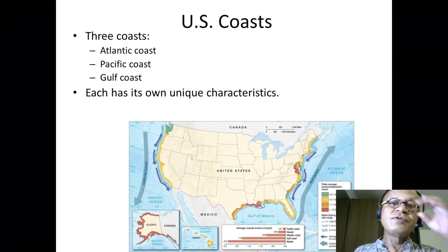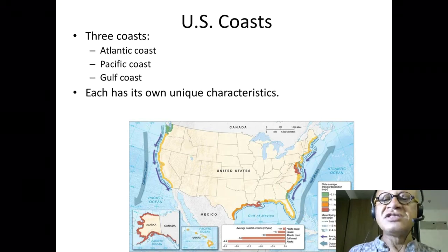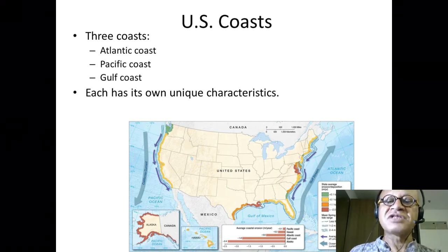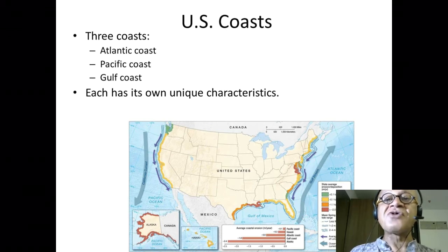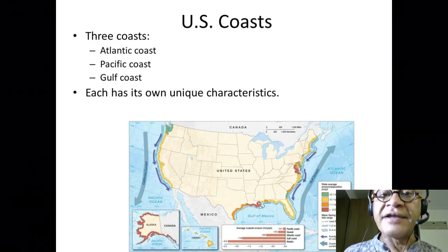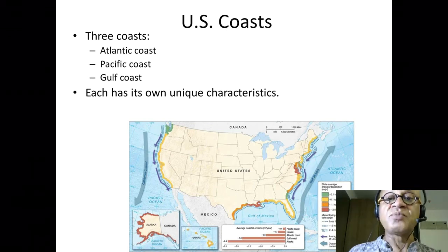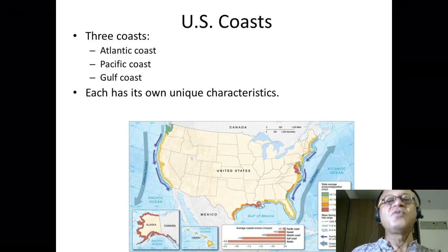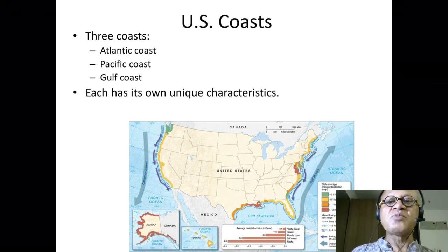We will see a little bit later that these pressure gradients by various mechanisms can also create geostrophic currents inside. You probably remember geostrophic — when you balance pressure gradients with Coriolis, you end up with geostrophic currents.